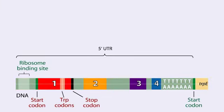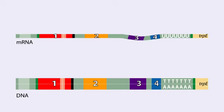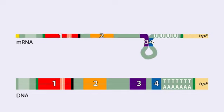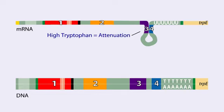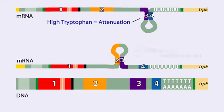Region 1 encodes a short peptide containing tryptophan amino acids. When tryptophan levels are high, region 3 pairs with region 4. This structure terminates or attenuates transcription. When tryptophan levels are low, region 2 pairs with region 3. This structure does not terminate transcription.